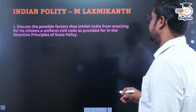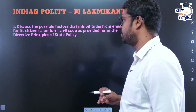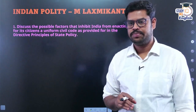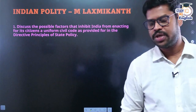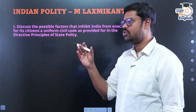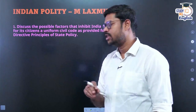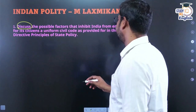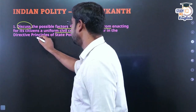Question 1: Discuss the possible factors that inhibit India from enacting for its citizens a Uniform Civil Code as provided for in the Directive Principles of State Policy. The question is asking about a specific aspect of the Uniform Civil Code — what factors prevent our country from having one. The biggest problem with students is that once they see a question, they start writing whatever they know about the topic rather than writing what is exactly asked.